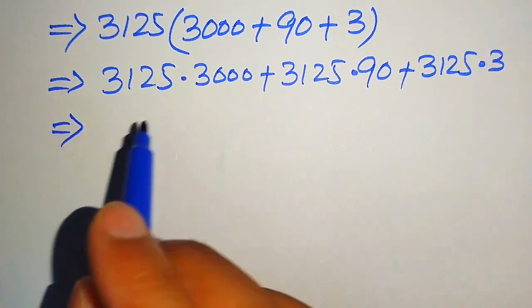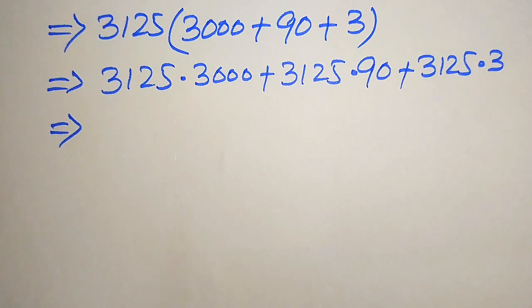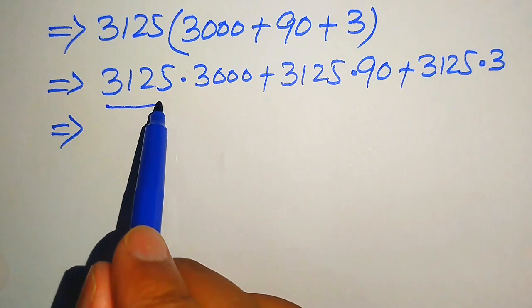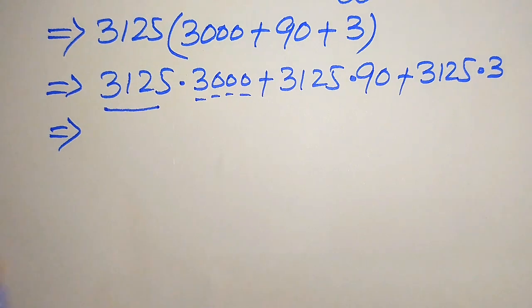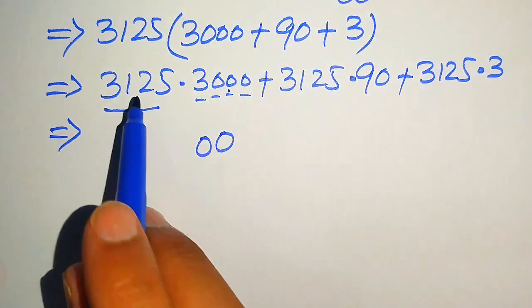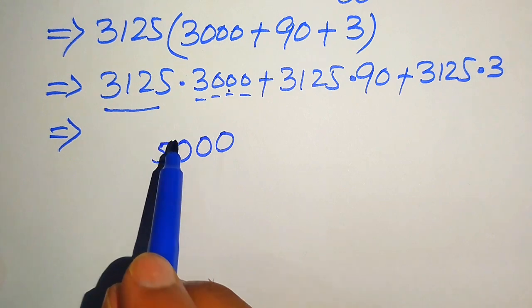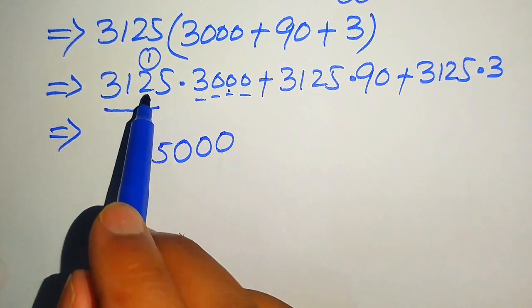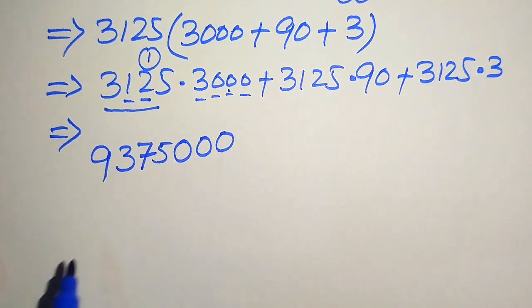We now multiply these larger numbers without using a calculator. For 3125 multiplied by 3000: treating 3 as a one-digit number, zero times this number is zero (three times), then 3 fives are 15 write 5 carry 1, 3 twos are 6 plus 1 is 7, 3 ones are 3, 3 threes are 9. This gives 9375 followed by three zeros: 9,375,000.